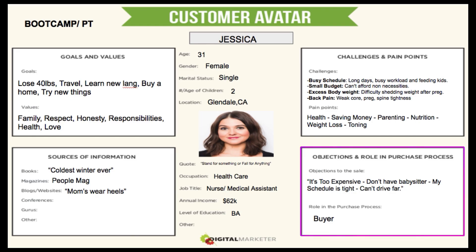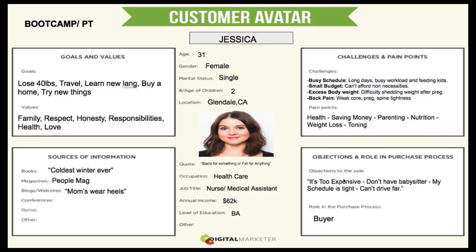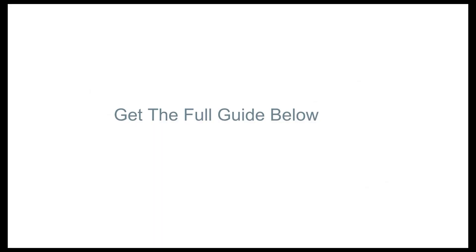Her objections: it's too expensive, no babysitter, schedule is tight, can't drive far. So here's what we do — we address each one. 'It's not too expensive because we're giving 25% off.' 'You don't need a babysitter because we have a baby section.' 'Schedule is tight? We're open seven days a week, 24 hours.' 'Can't drive far? We're only targeting a five-mile radius, so if you saw this ad, you're already in range.' Understanding these objections puts consumers on a fast track — we've already solved the problem for them before they even raise it.